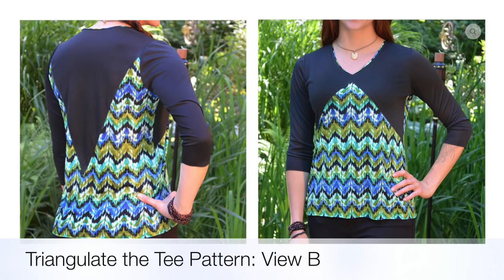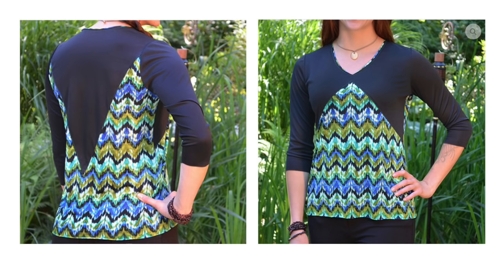I'm wearing view B of my latest pattern Triangulate the T. Here it is and the back has a V on it that can be embellished as well, but what I wanted to do for this one was some serger embellishing with pin tucks as well as cover and chain stitching.